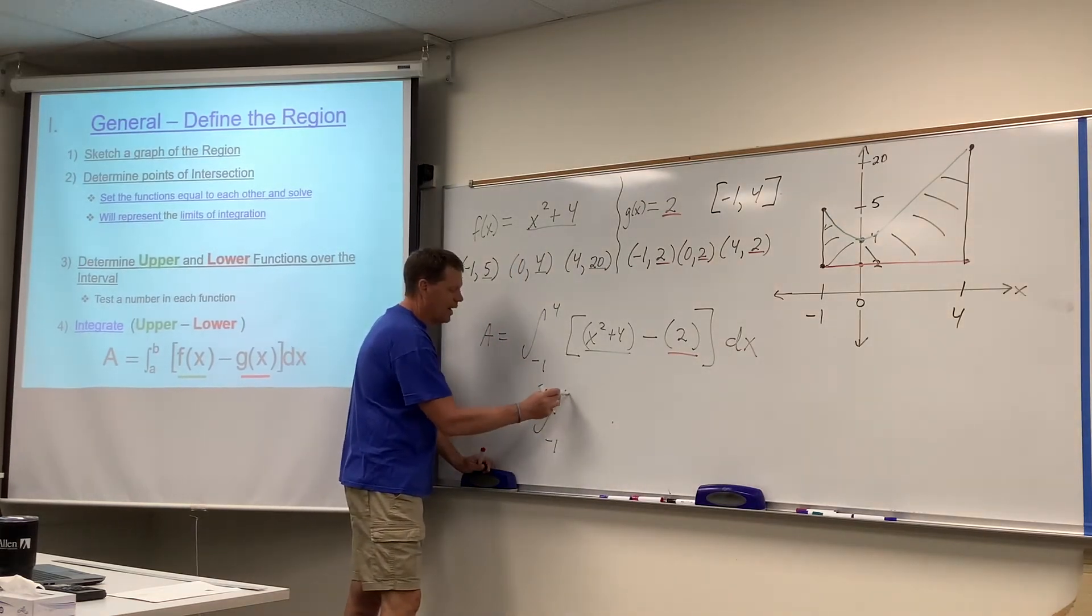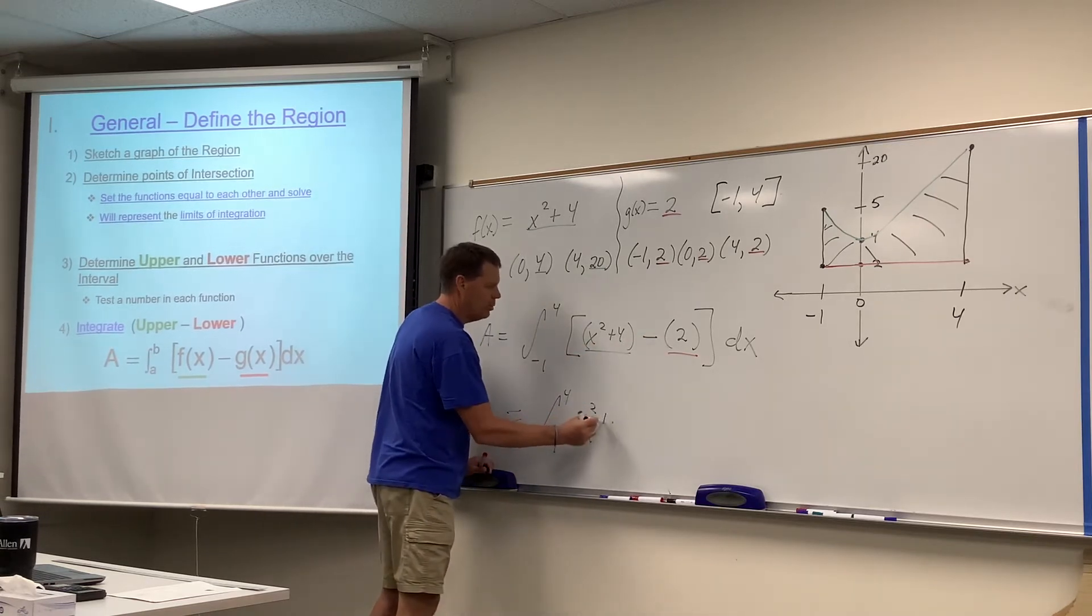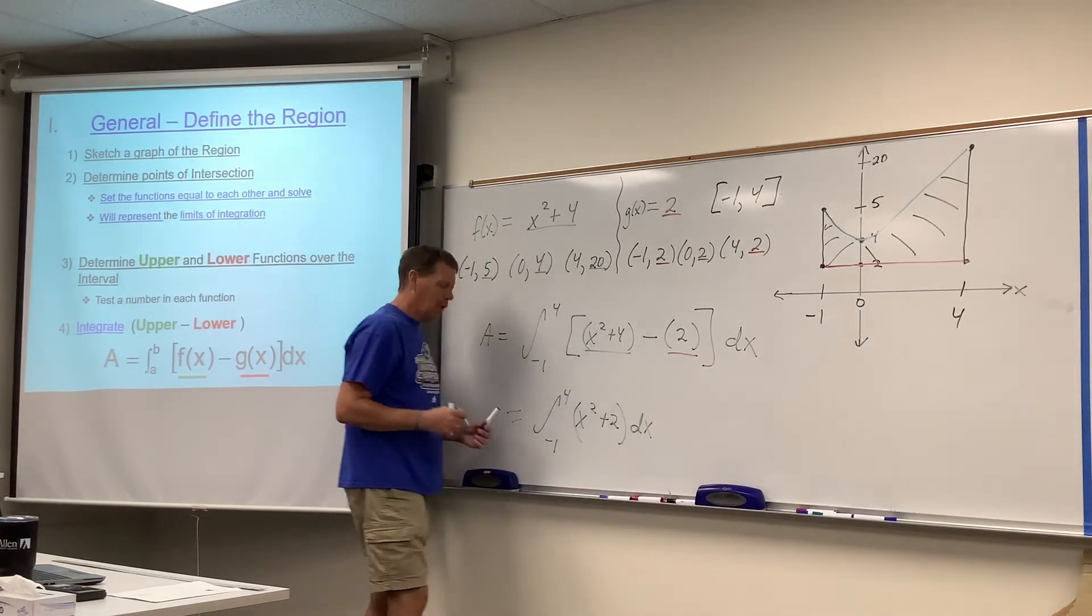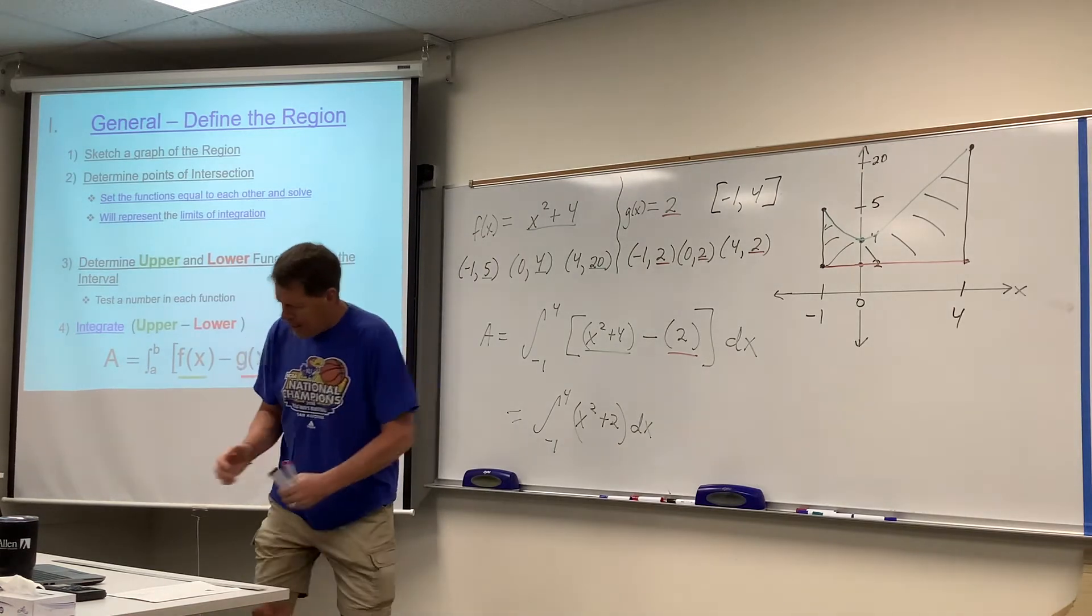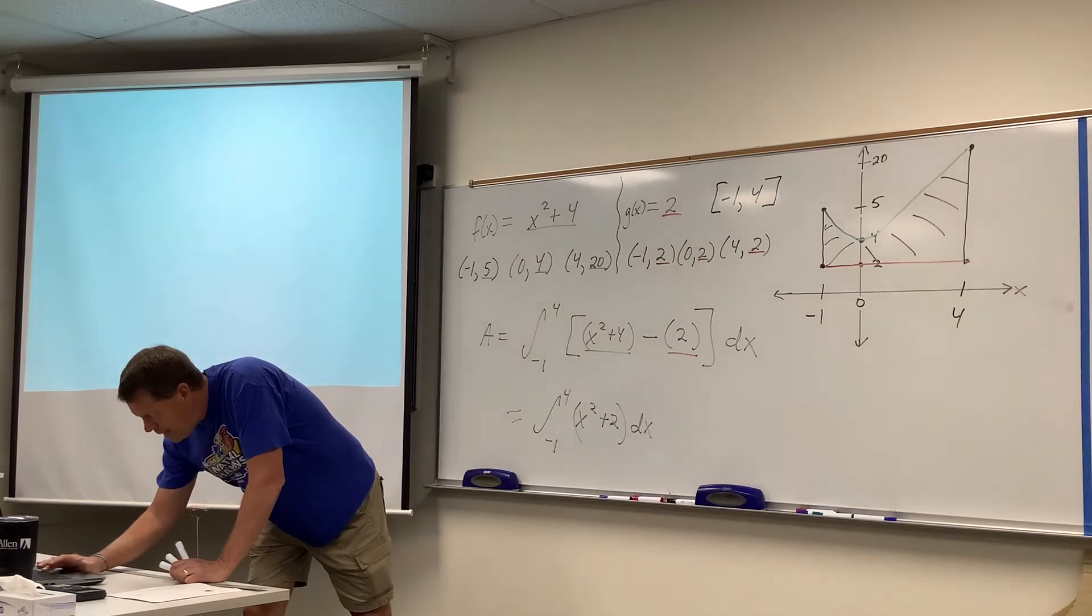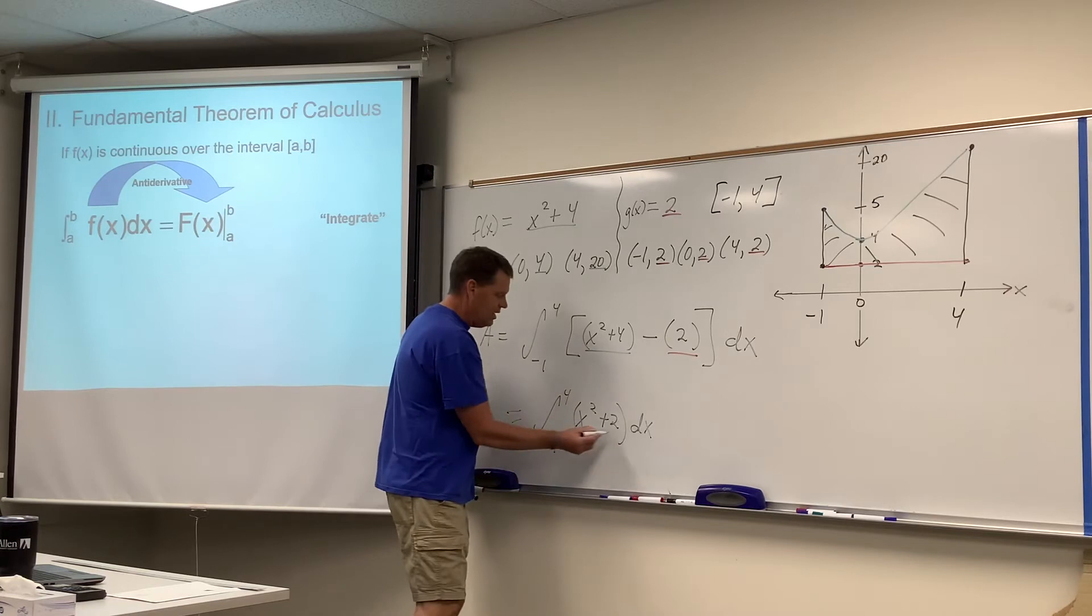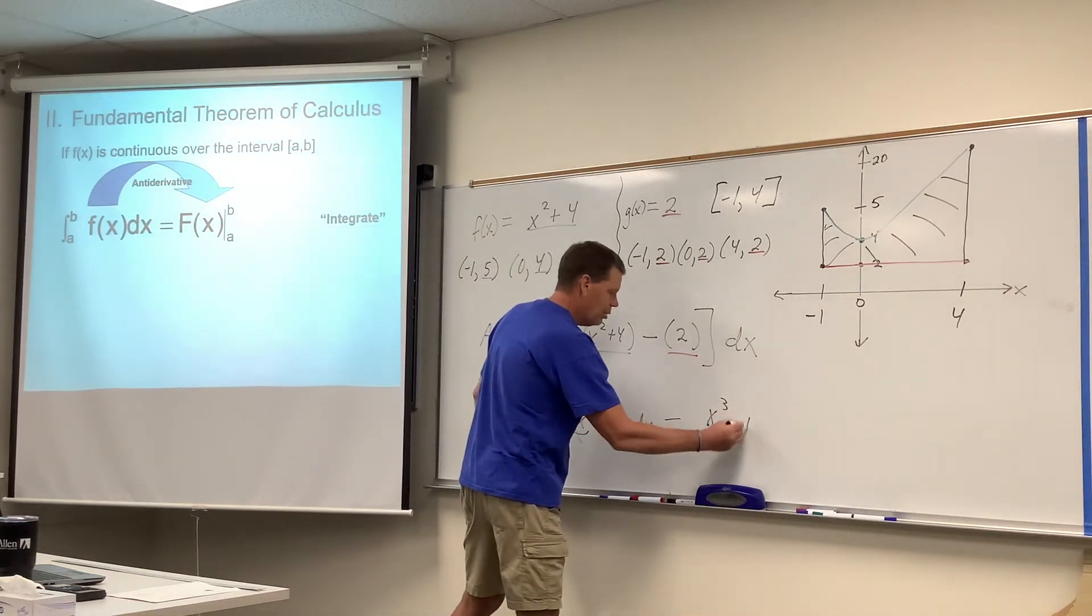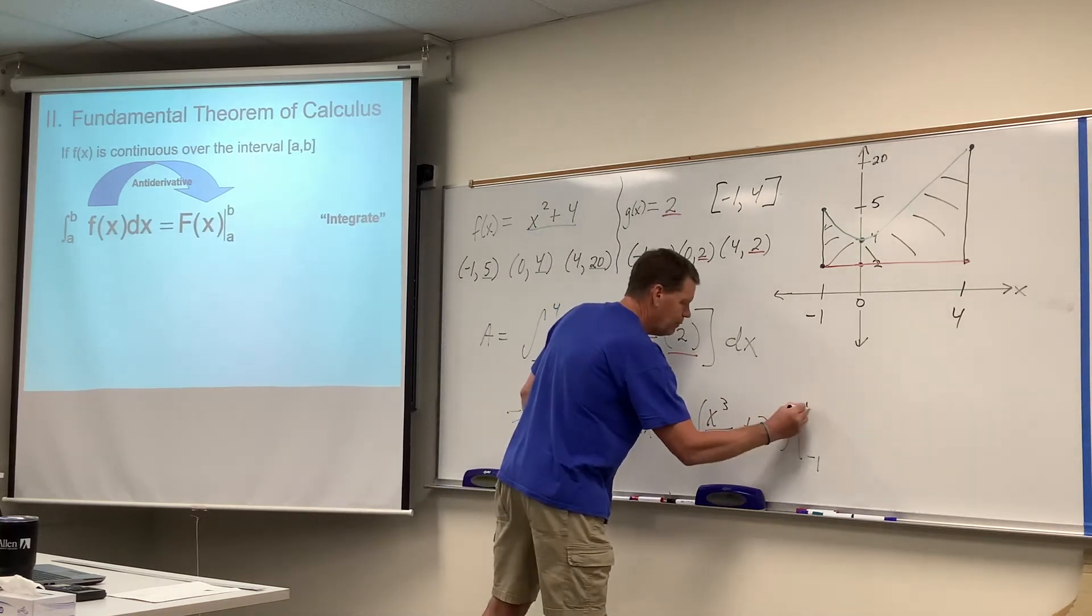Let's simplify that integrand, four minus two, so that would change into X squared plus two. You know, if you can ever simplify your integrand, I want to remind you that's the expression within the integral. And then, here we go again. Integrate, evaluate. So we find the antiderivative of this. This is easy. These are just terms. X cubed over three plus two X.